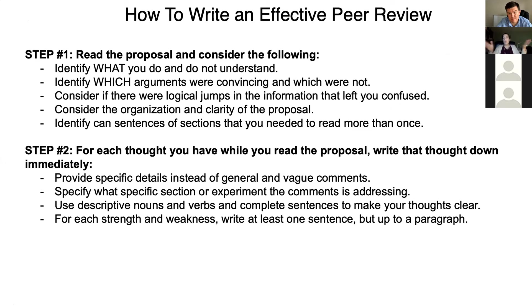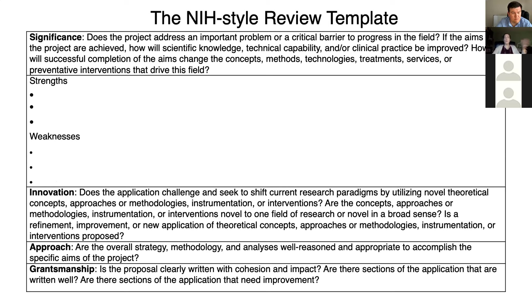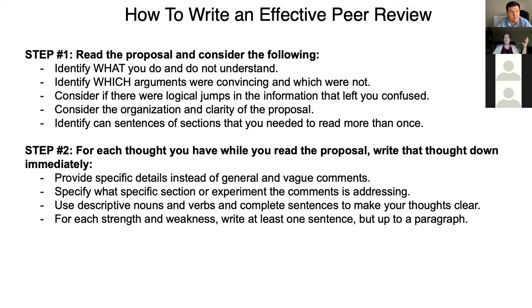Let's talk about the steps to achieve an effective peer review. The first step is to read the proposal. As you read, think about the criteria — significance, innovation, approach, and grantsmanship — and identify what you do and do not understand. It's very important to tell your colleague what you understood and what you didn't, because ultimately it's the proposal writer's job to be clear and effective. I have to admit, when I write my own grants, I wish I could learn this before going to the study section — we all could use help knowing what people understand and don't understand.